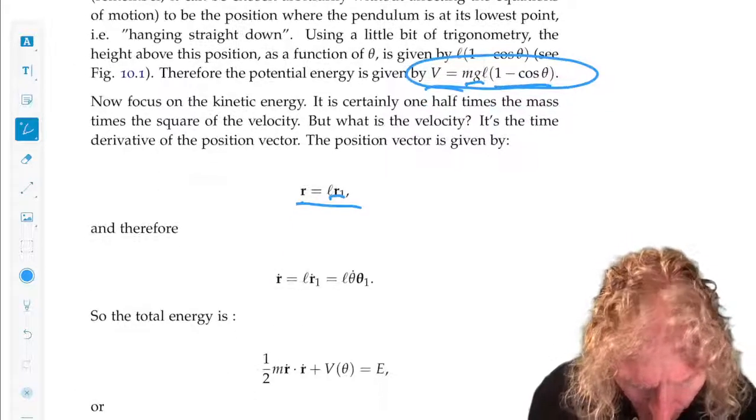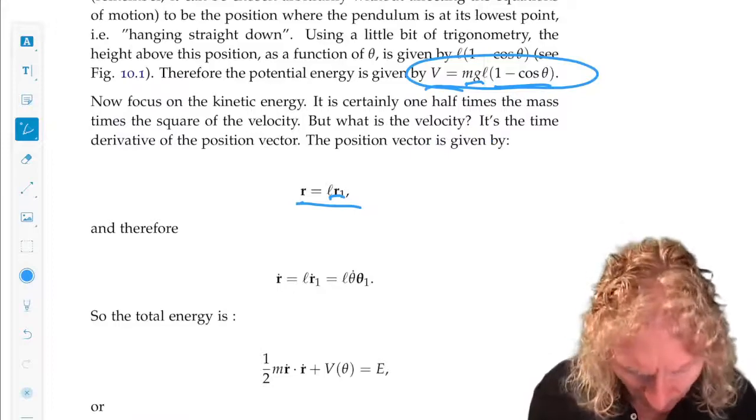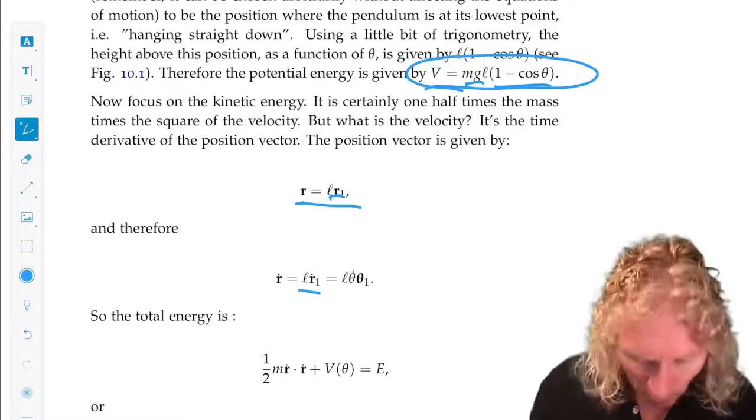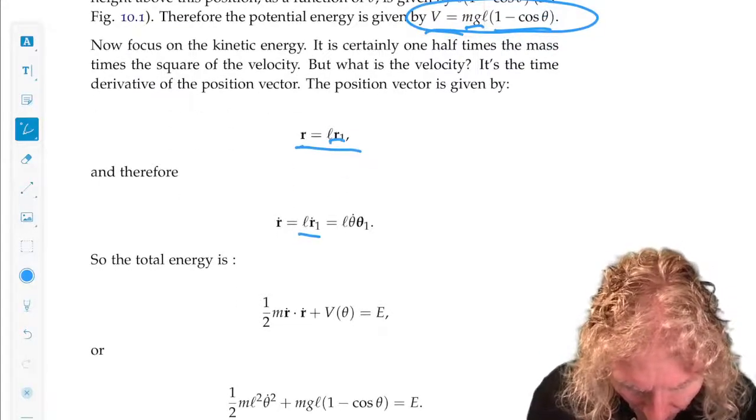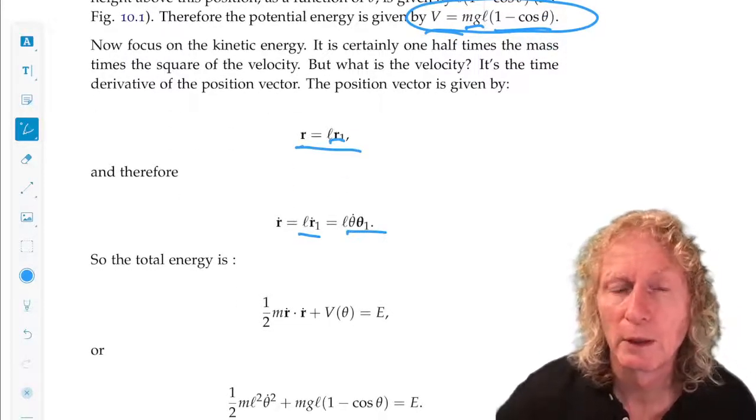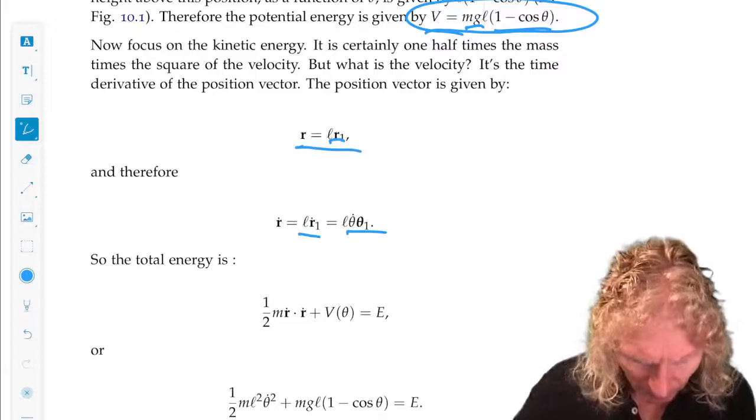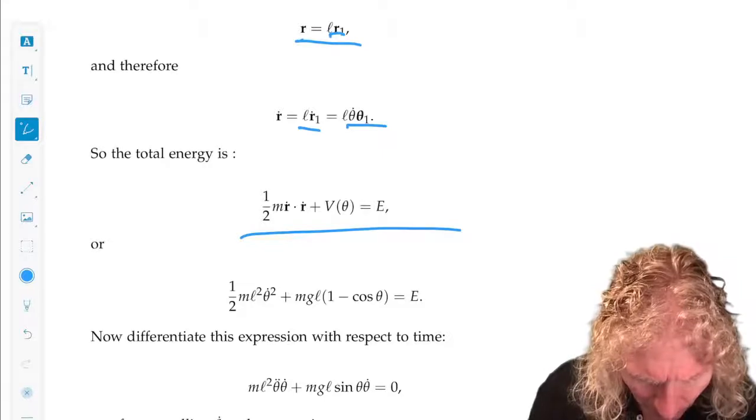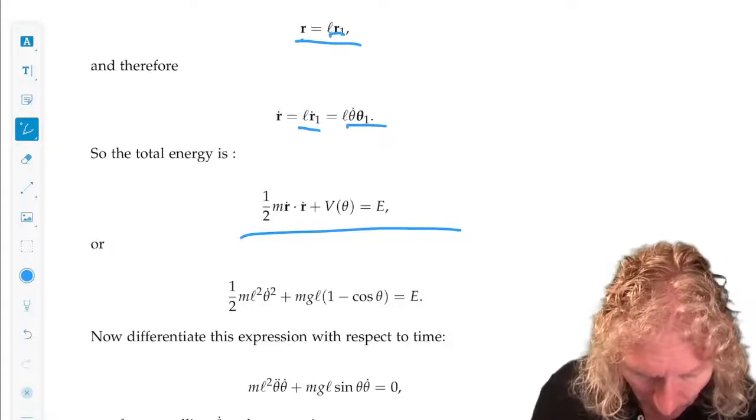So R dot, L doesn't change. It's just L R1 dot, and we know what R1 dot is. It's theta dot unit vector theta1.